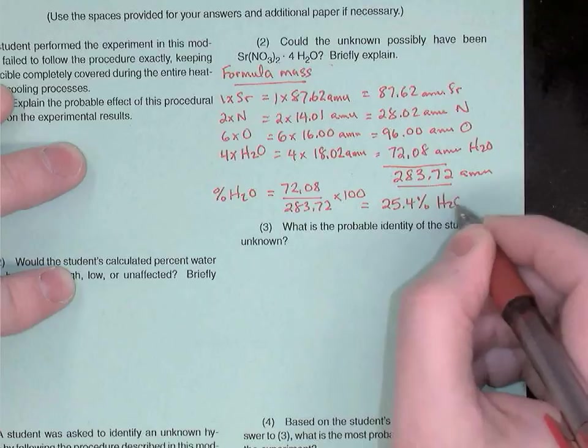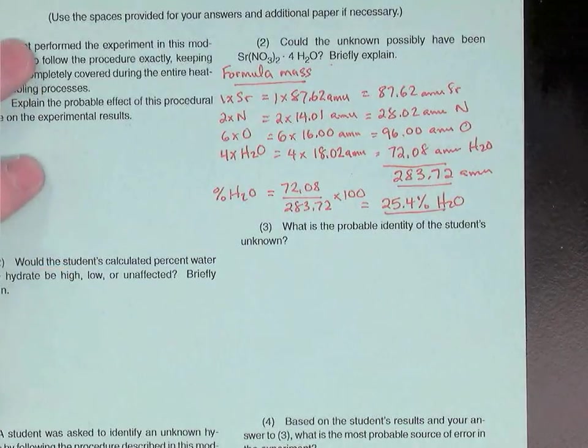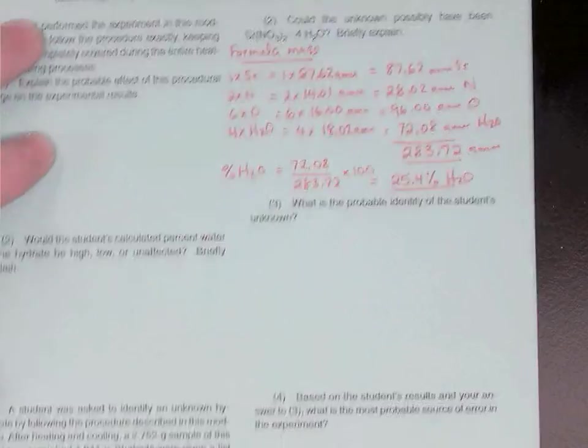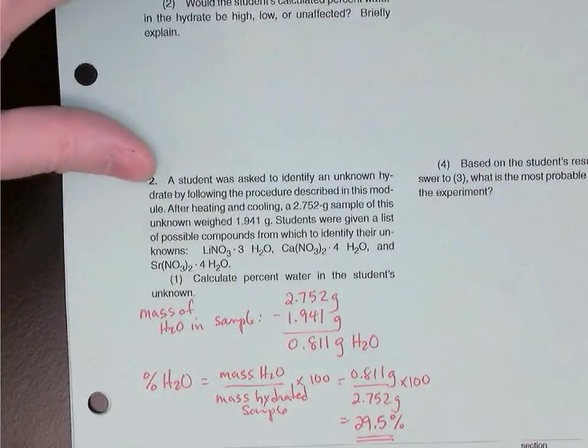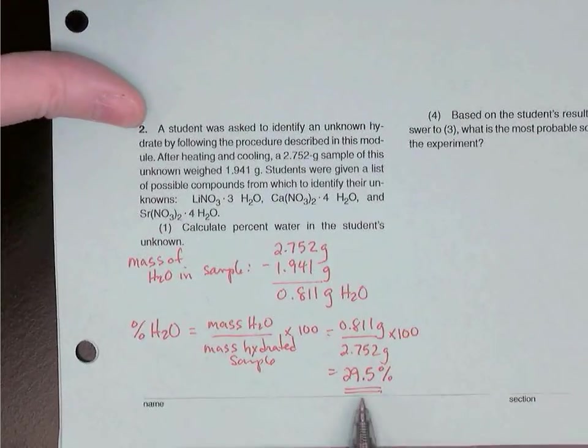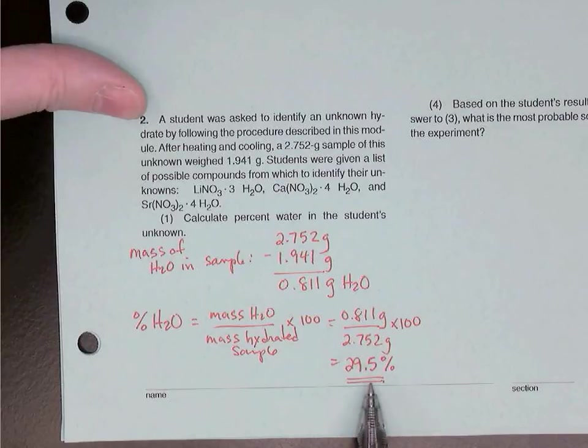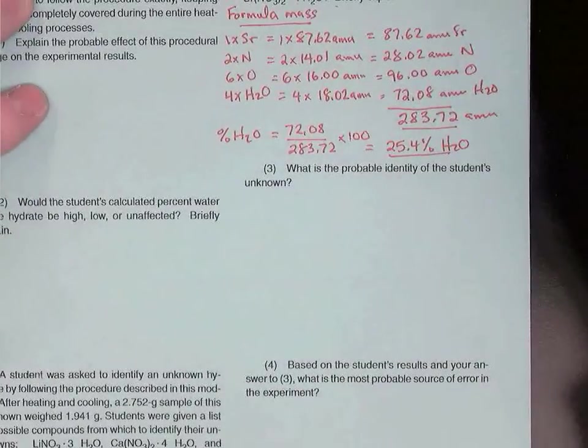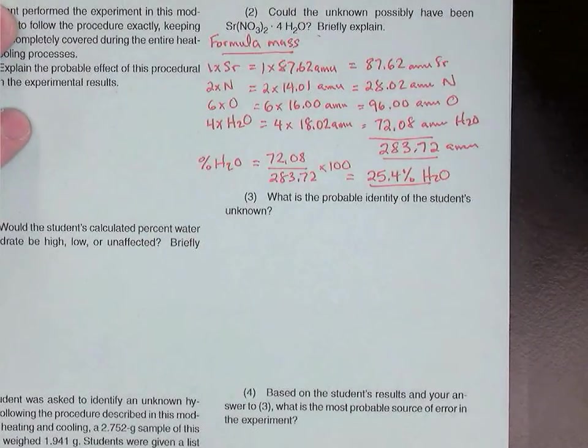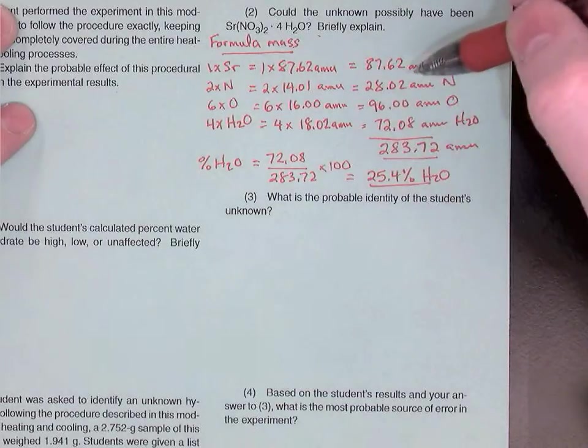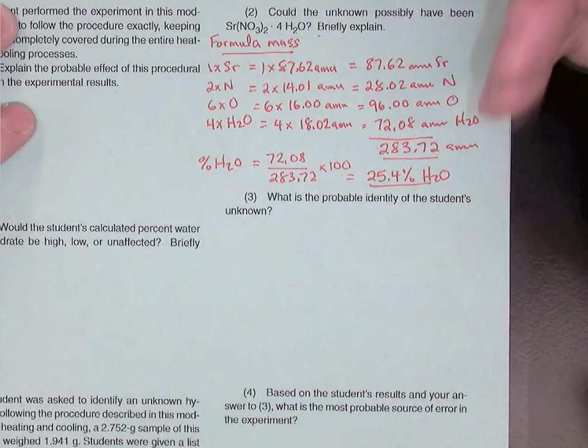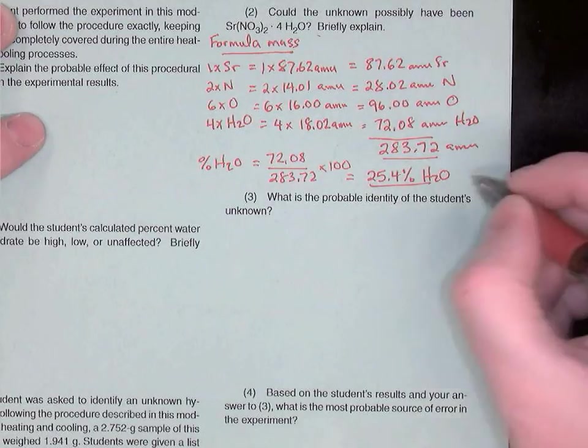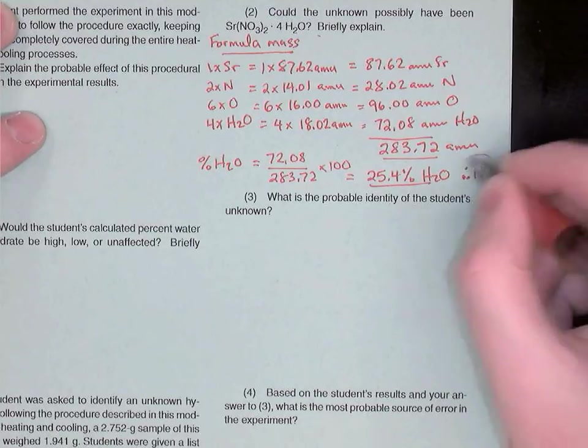So could the unknown have been this salt? Well, theoretically, the percent water should have been about 25%, but this student got an answer of 29, if you recall, 29.5% was their percentage of water. Now, in a real-world experiment, you might think that that's not that far off, and so you might say, well, yeah, maybe. But here we'll assume everything was done carefully, and we'll therefore say that a 4% error like that, 4% off, is not going to be close enough. So we'll say, therefore, no. Okay, it was not this salt.